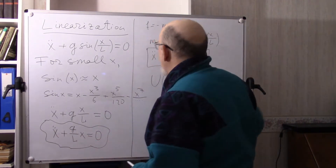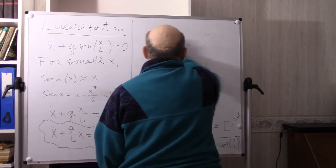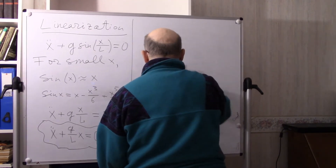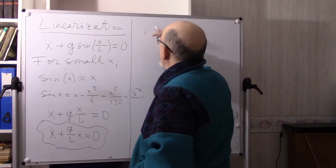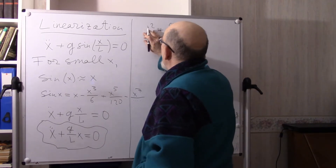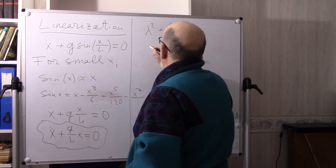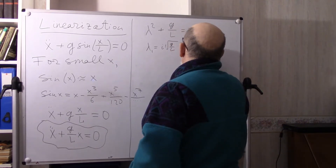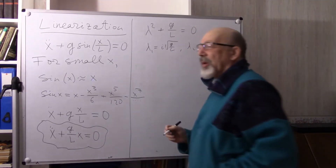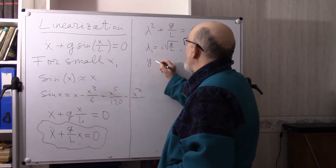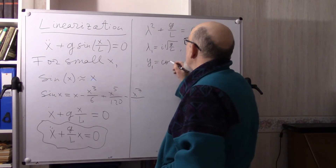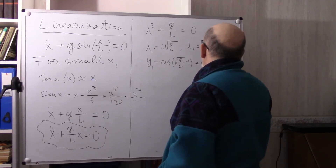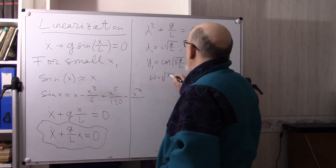Now we have the linearized equation. Let us solve it using the characteristic equation: lambda squared plus G over L equals 0. This gives lambda 1 equals i times the square root of G/L, and lambda 2 equals minus i times the square root of G/L. So the solutions are Y1 equals cosine(omega t) and Y2 equals sine(omega t), where omega equals the square root of G divided by L.